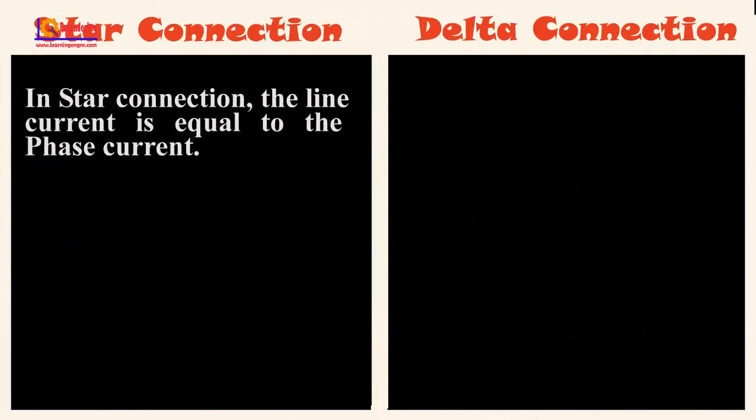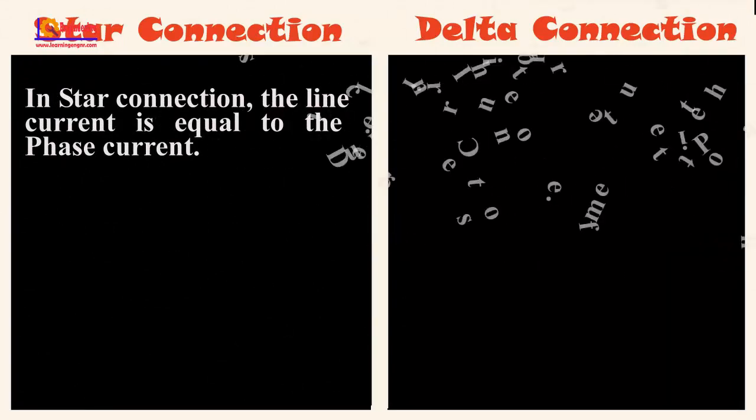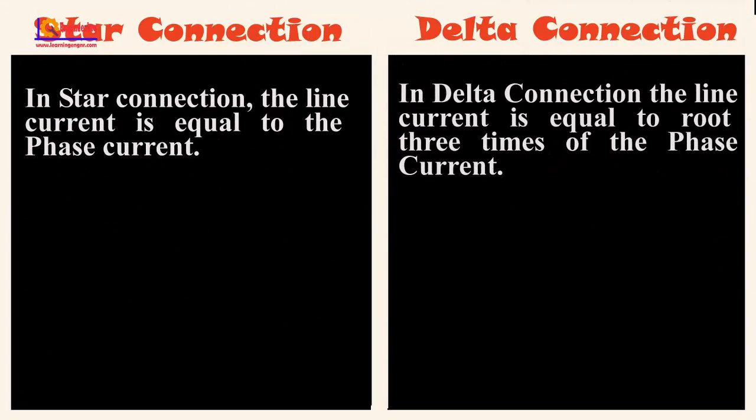In star connection, the line current is equal to the phase current. In delta connection, the line current is equal to root 3 times the phase current.